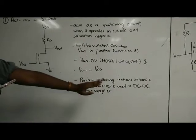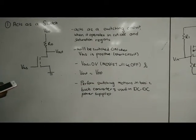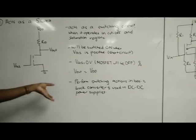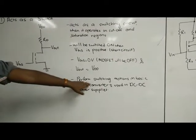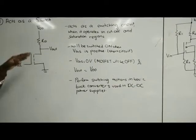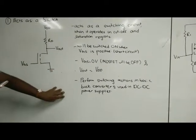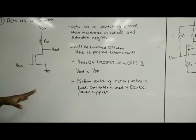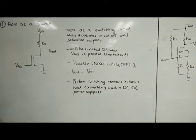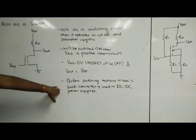When the gate voltage is zero volts, the MOSFET will be switched off and the output voltage equals VDD. This performs switching action in basic buck converters used in DC-DC power supplies. For this action, the inductor keeps the current and the source supplies, or the source keeps the current and the inductor supplies - it's an alternative action.